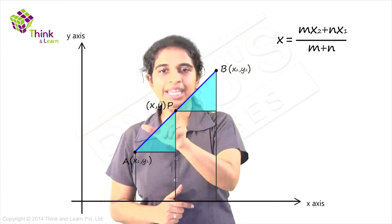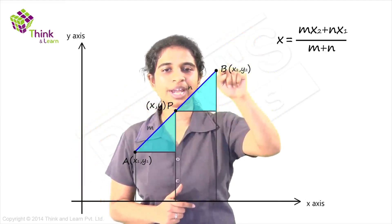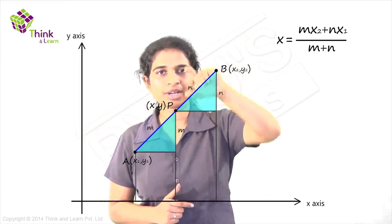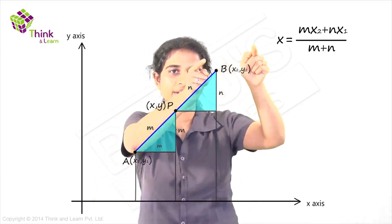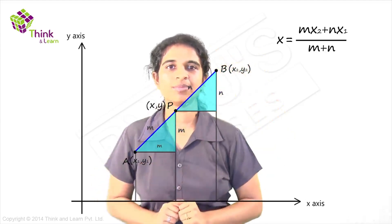So if AP to PB is m to n, this will also be m and this will be n. Similarly the third side, this will be m and that will be n because these two are similar triangles.